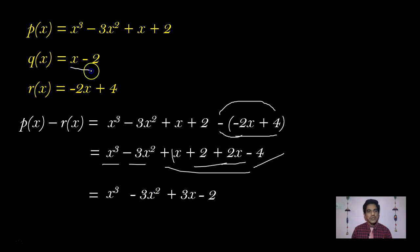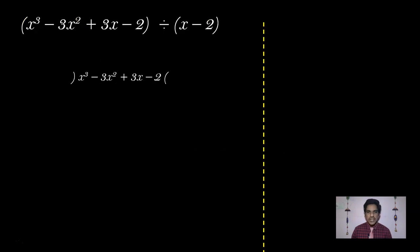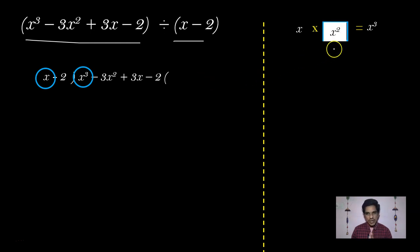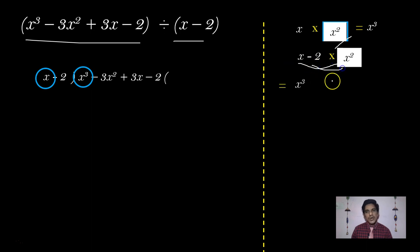Now we divide p(x) - R(x) = x³ - 3x² + 3x - 2 by Q(x) = x - 2. Comparing first terms: x³ divided by x gives x². Multiply the divisor x - 2 by x²: x³ - 2x². Write x² in the quotient and x³ - 2x² in the dividend part.